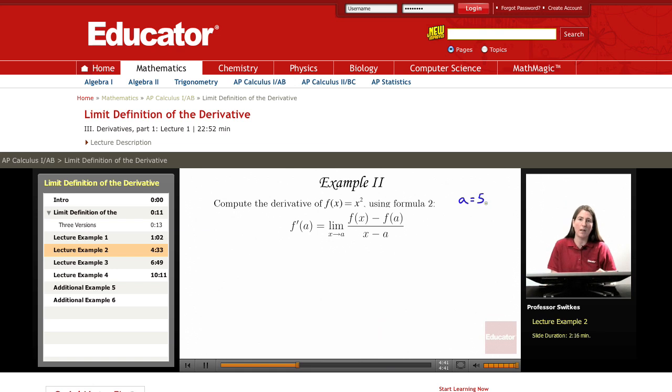So here again is an alternative formula for computing the same derivative. I'm again going to let a equal 5, and so we're going to be computing f prime of 5 but by this very different looking formula to give us the same result. Okay, so getting started, we're working on computing f prime of 5 and we will have the limit as x approaches a where a is 5.